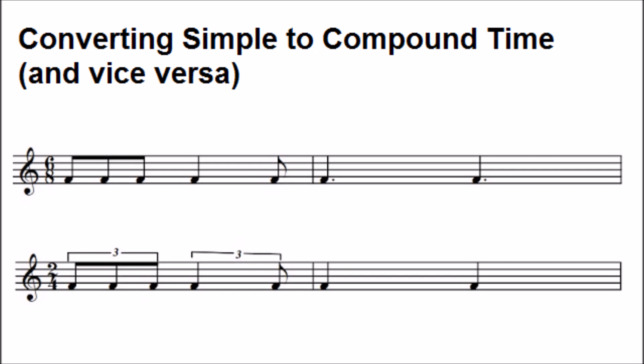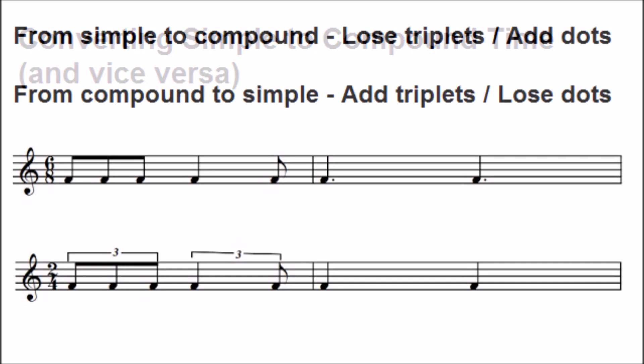You will notice that in order to convert from simple to compound time, you lose triplets and add dots. And vice versa, from compound time to simple time, you add triplets and lose dots.